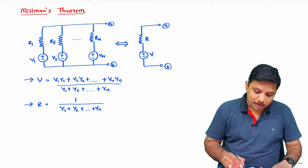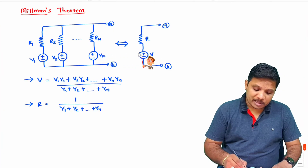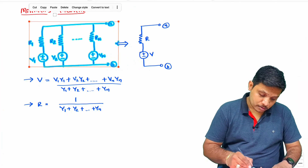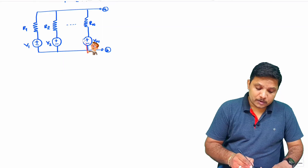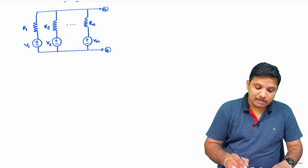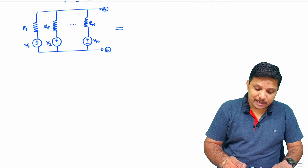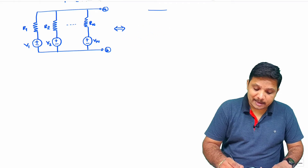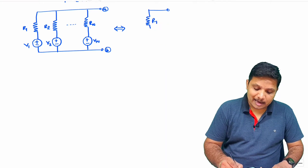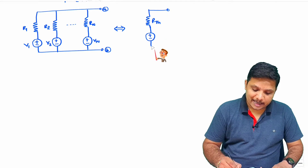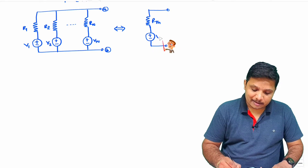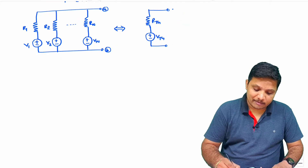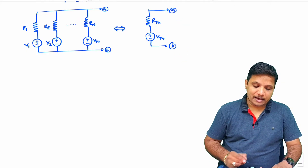Now let me explain the basic proof of Millman's theorem. To prove it, I will be using Thevenin's equivalent circuit. Thevenin's equivalent circuit is Rth in series with Vth. That is my Thevenin's equivalent circuit, where this is terminal A and this is terminal B.